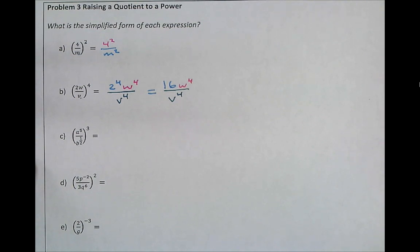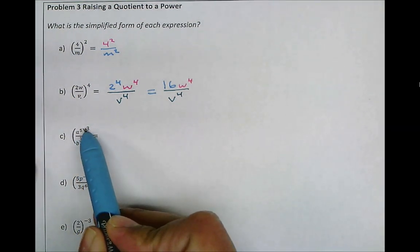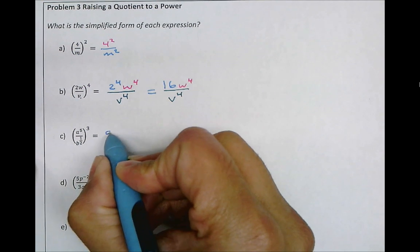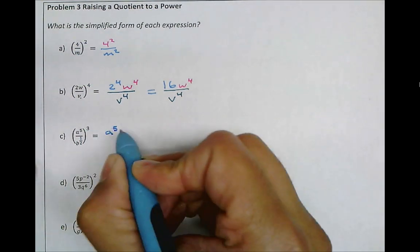In the next example, we have a power raised to a power within here. So we have a to the power of 5 raised to the power of 3. Recall from another lesson, that means a to the power of 5 times 3.